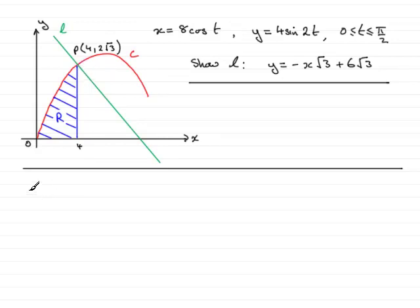So first of all then, find the gradient at any point on the curve, so we have dy by dx. Now when you have a parametric curve, the way around this to get dy by dx is to do dy by dt multiplied by dt by dx. In fact, we're using the chain rule here.